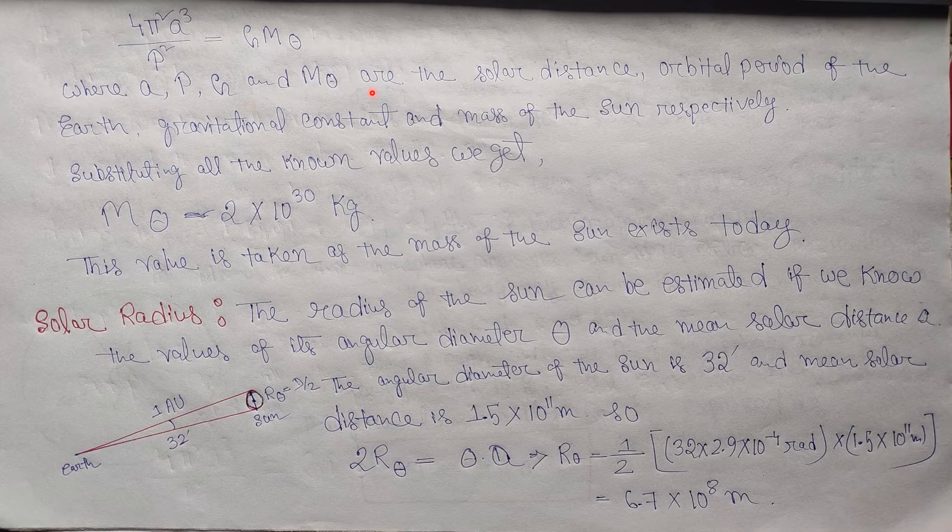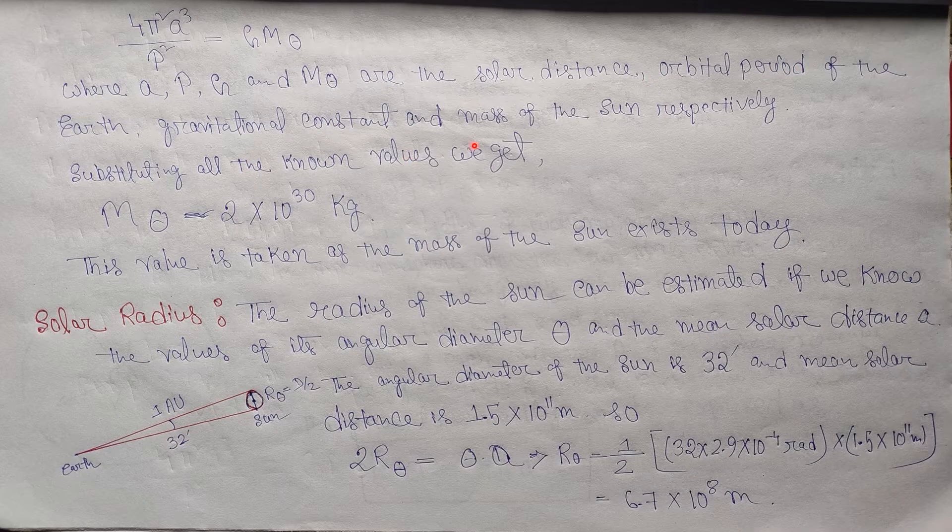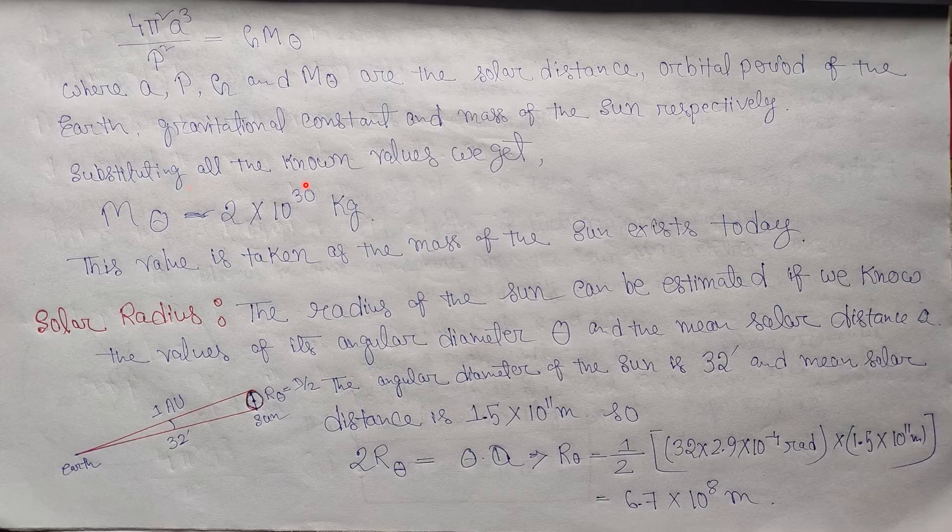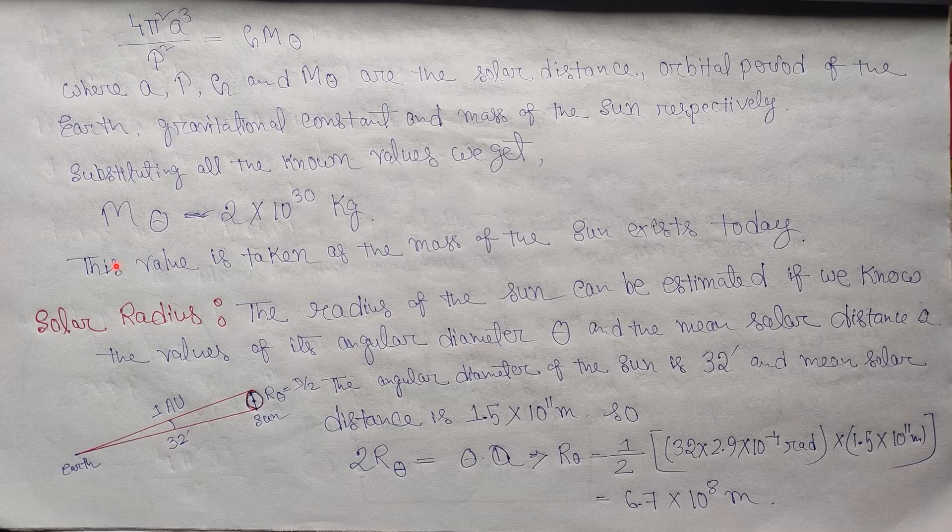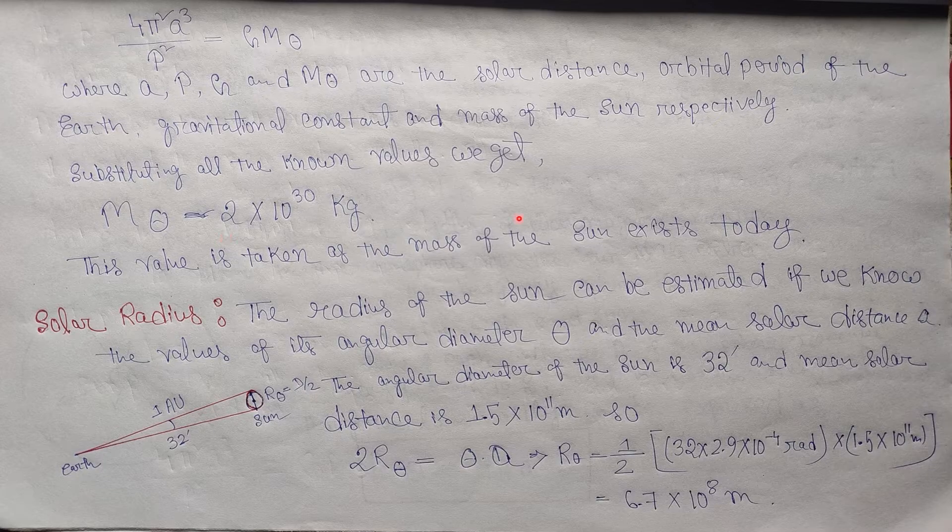Where a, P, G, and M☉ are the solar distance, orbital period of the earth, gravitational constant, and the mass of the sun respectively. So putting all these known values, we get mass of our sun as M☉ = 2 × 10^30 kilograms. This value is taken as the mass of the sun that exists today.